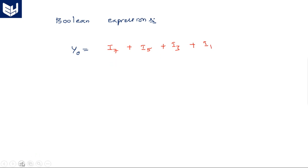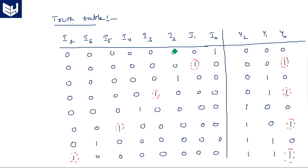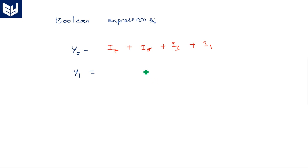Coming to the second output, Y1 is equal to — look at when Y1 is 1 in the truth table. Y1 is 1 for I2, I3, I6, and I7. So Y1 equals I7 plus I6 plus I3 plus I2.